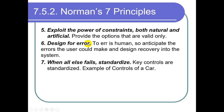Principle 6: Design for error. Humans make errors — they can make mistakes or slips while performing any task. Anticipate the errors a user could make and design accordingly. First, try to prevent errors from occurring. But if an error does occur, provide a mechanism to recover the system so it does not crash. The approach is: first, do not let errors appear; but if they do appear, have a recovery mechanism.